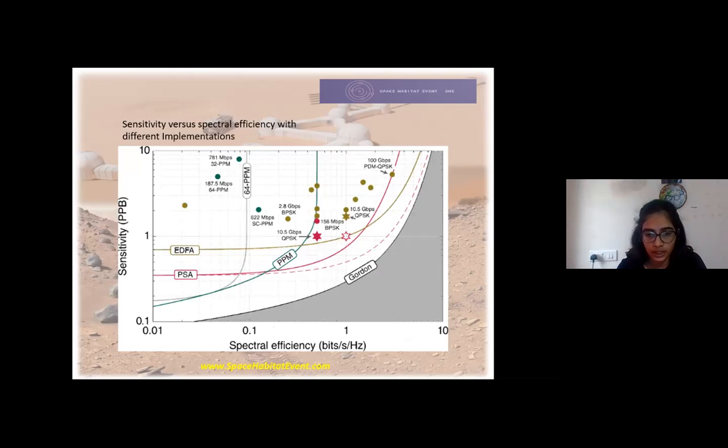Here we can see the spectral efficiency versus the sensitivity of signals. In phase-sensitive amplification, we generally use 64 PPM type of amplification. As the spectral efficiency increases, the sensitivity of this PPM decreases. Only at 0.1, the sensitivity is high. But for longer and more spectral efficiency, it is not useful for transmission of signal to Mars. Whereas the PSA phase-sensitive amplification is more efficient and has more spectral efficiency as well as sensitivity.